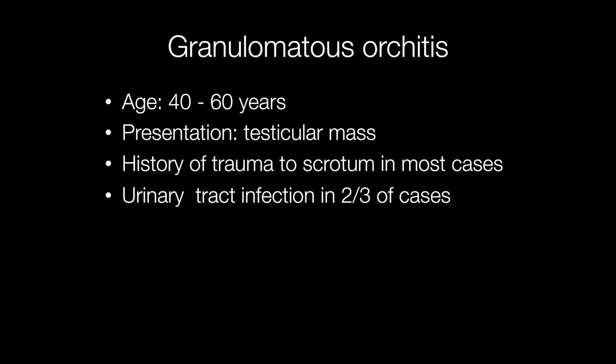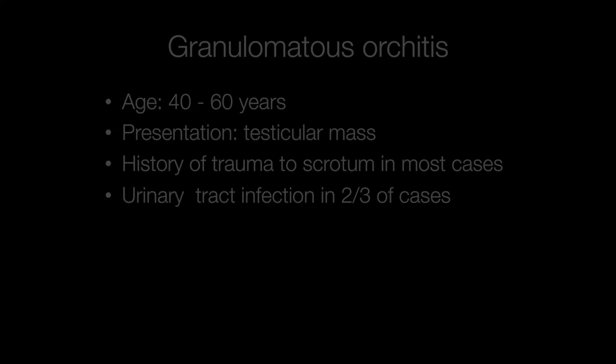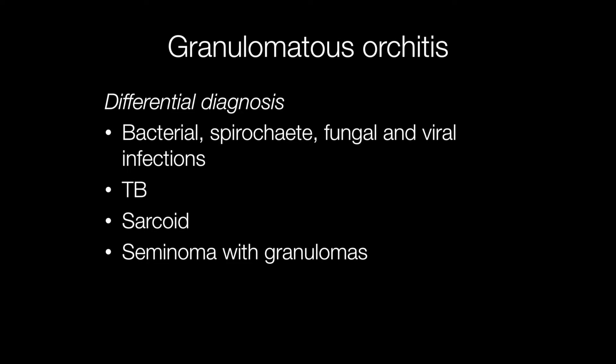Granulomatous orchitis usually presents between the ages of 40 and 60. The presenting symptom is usually a testicular mass, and occasionally there may be fever. In most cases there is a history of trauma to the scrotum, and in two-thirds of cases a history of a urinary tract infection. The differential diagnosis includes bacterial, spirochete, fungal, and viral infections of the testis, tuberculosis, sarcoid, and seminoma with granulomatous inflammation.